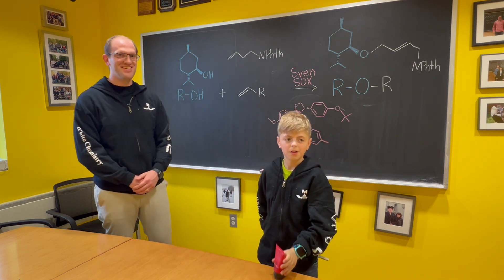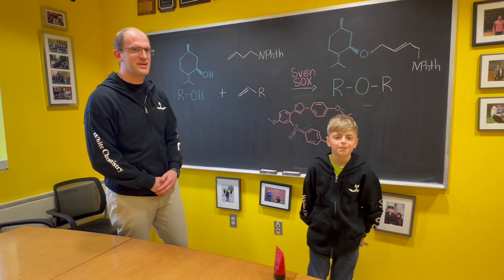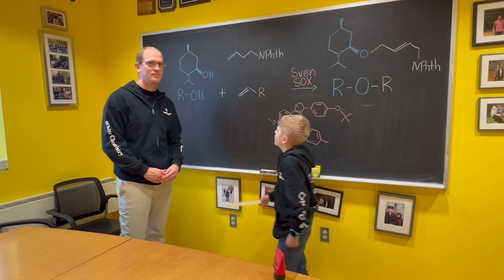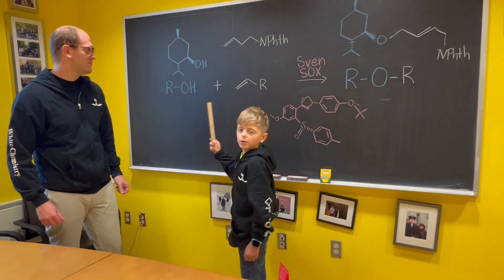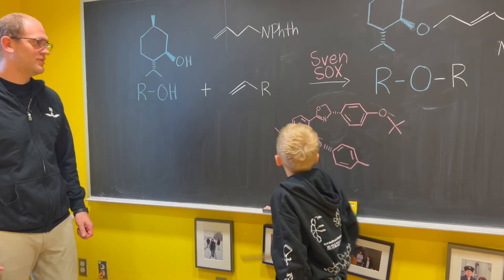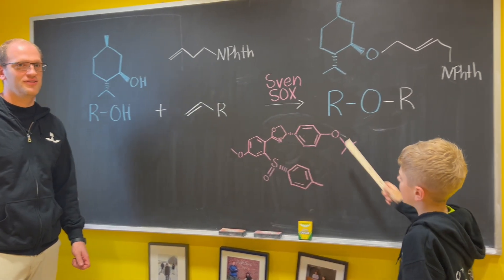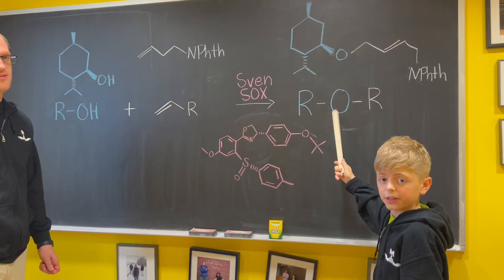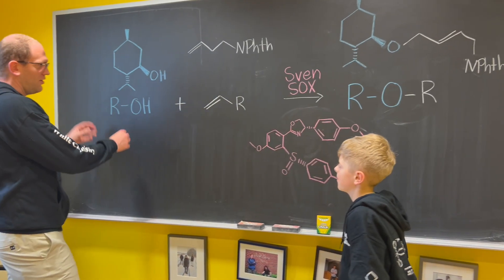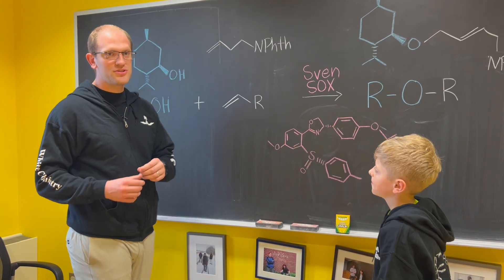Well, I don't need the hair gel, but Leonidas, tell us about a cool ether you're making in lab today. What are the ingredients that you'll be using? We will use an alcohol plus an alkene, and we will add the SvenSOX catalyst, and then we will end up with an ether. So an alcohol, an alkene, and an ether are all functional groups.